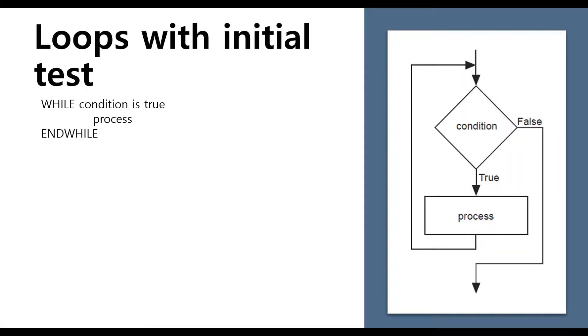First of all, we have in general two types of loops. These are a loop with initial test and a loop with final test. Let's go through each of these types of loops. Once again these concepts are really the same for any programming language.